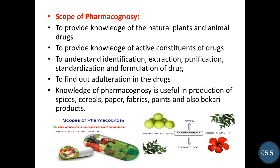The next point is the scope of Pharmacognosy. Pharmacognosy is utilized in various fields. First, Pharmacognosy provides the knowledge of natural plant and animal drugs. It provides the knowledge of active constituents of drugs. It is used to understand identification, extraction, purification, standardization, and formulation of drugs. It is also useful to find out adulteration in drugs. The knowledge of Pharmacognosy is useful in production of different spices, cereals, paper, fabrics, paint, and also for bakery products. Pharmacognosy deals with different branches also — botany, medicinal chemistry, pharmacology, and pharmaceutics.